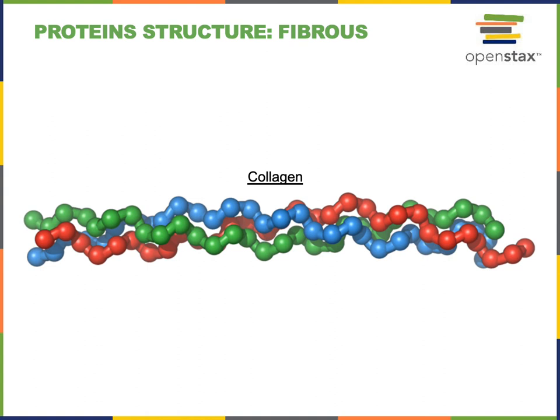Fibrous proteins are long protein strands that provide structural support to cells and tissues. Collagen is the most abundant protein in the body and provides structural support for the skin, for example. The dermis, the majority of the skin, is strengthened by fibers of collagen. Collagen is also found in our bones and joints, and most of the tissues that support our body have structural support from collagen proteins.